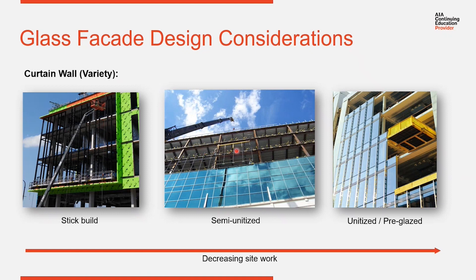This is pre-assembly — semi-unitized or pre-assembly. You can see four modules of four columns already pre-built into one. An adjacent one is already installed. These are raised up one by one and set in place. All of the joinery being done in the field here has already been done in the shop, so you don't have to worry about that field labor — it's already been done in the shop environment.